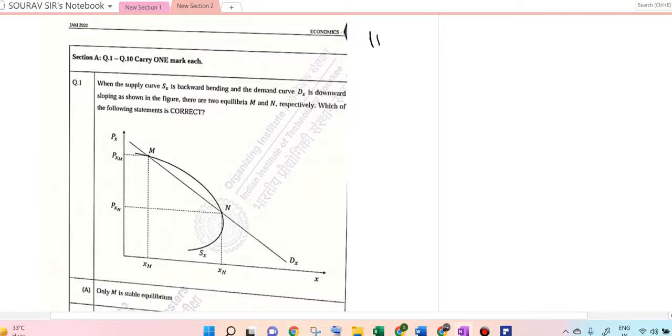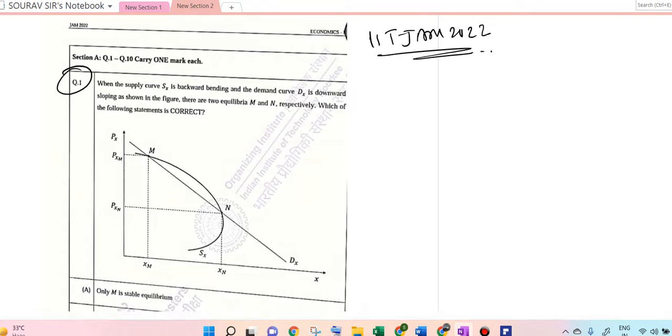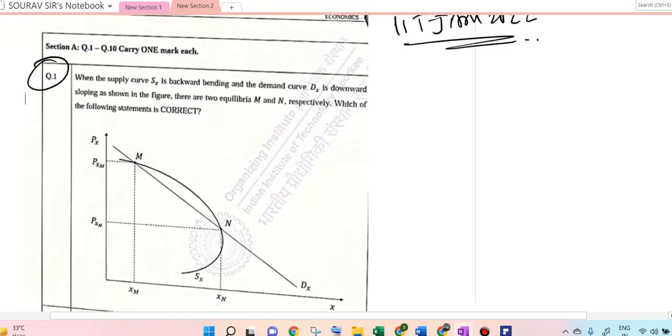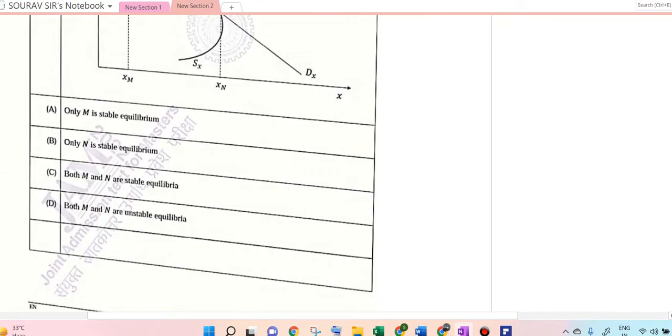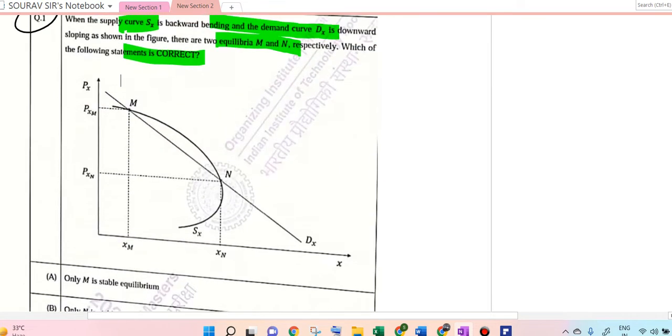Hello students, in this video I will be solving IIT JAM 2022 question paper. Let's start with the very first question. What they have given over here is when the supply curve Sx is backward bending and the demand curve Dx is downward sloping, there are two equilibria M and N. Which of the statement is correct? So it's about the stability of the equilibrium they have asked.